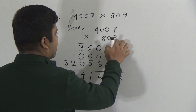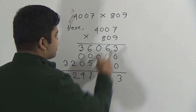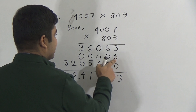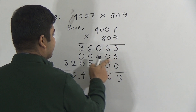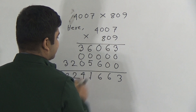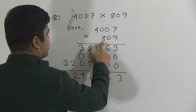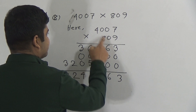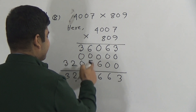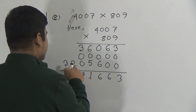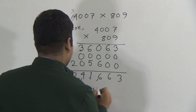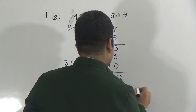Let me repeat: 9 sevens are 63, carry 6; write 6. 9 zeros are 0, 9 fours are 36. Then multiplying by 0 gives 00. Then multiplying 4007 by 8: 8 sevens are 56, write 6, carry 5; 8 zeros plus 5 equals 5; 8 zeros are 0; 8 fours are 32. Adding all partial products: the answer is 32,41,663. I write 32,41,663.